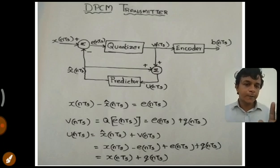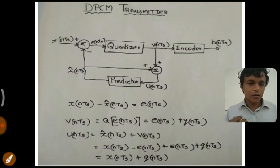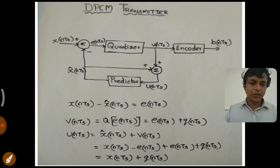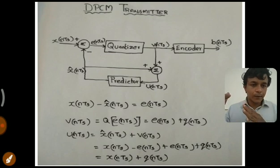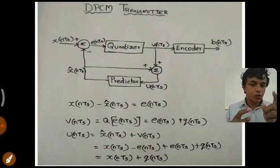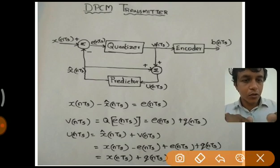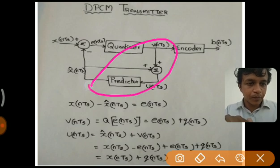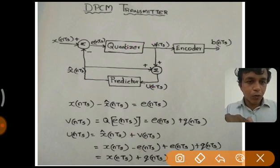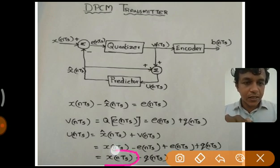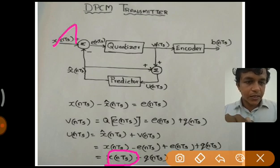The final result is that u(nTs) = x(nTs) + q(nTs), which serves as the input to the predictor. This equation does not depend on e(nTs), the predicted error, or on x̂(nTs), the predicted value — it purely depends on the quantized input signal. So although we performed all these operations, the final input to the predictor is simply the quantized value of the input sample: x(nTs) plus the quantization error q(nTs).